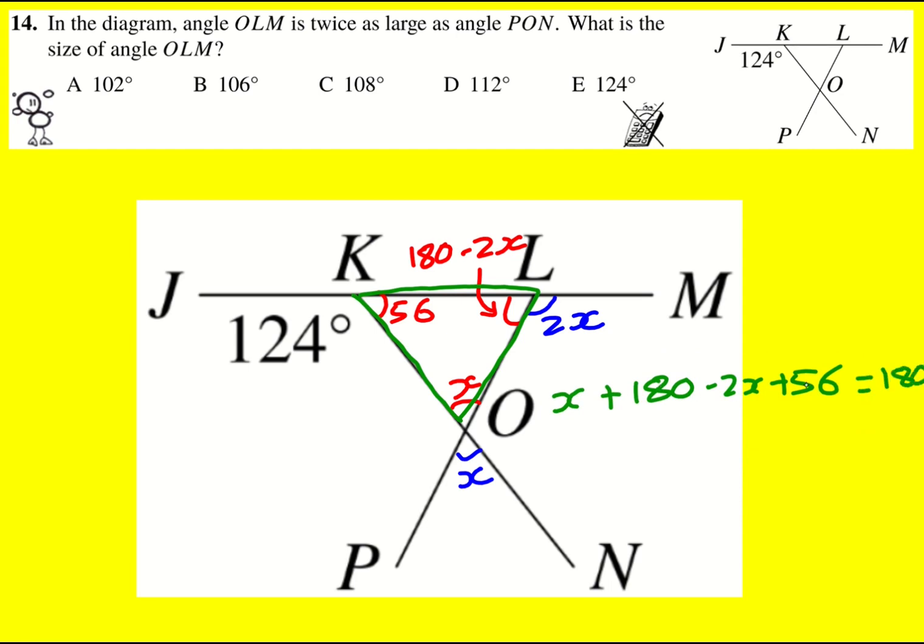I could add the 180 and the 56 together to simplify it, or I could just straight away cancel it out by subtracting 180 from both sides. That's actually much simpler. So then I get minus X plus 56 equals 0, and therefore X equals 56.